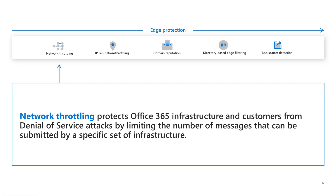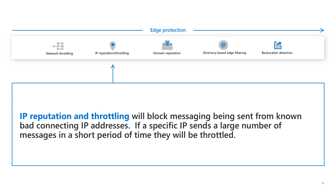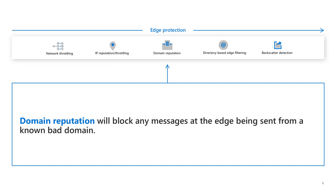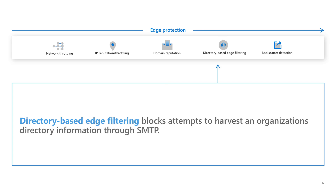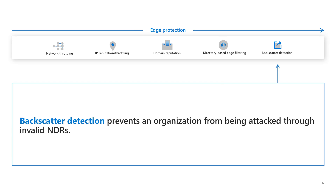Starting with Edge, we have network throttling, which protects Office 365 infrastructure and customers from denial of service attacks by limiting the number of messages that can be submitted by a specific set of infrastructure. Next, IP reputation throttling blocks messaging sent from known bad connecting IP addresses — if a specific IP sends a large number of messages in a short period of time, it'll be throttled. Domain reputation blocks any messages at the edge from being sent from a bad domain. Directory-based edge filtering blocks attempts to harvest an organization's directory information through SMTP. Backscatter detection prevents an organization from being attacked through invalid NDRs.